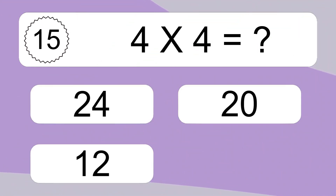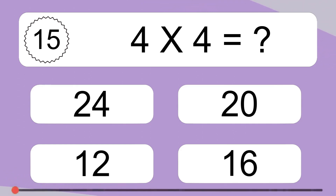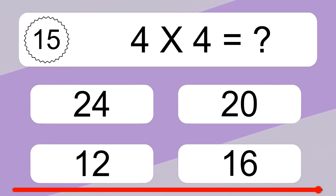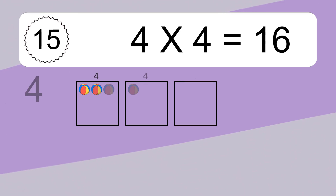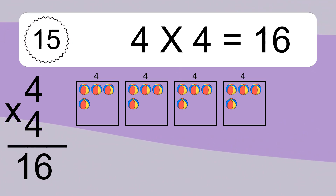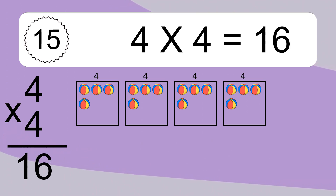Four times four equals what? Four times four equals sixteen. We have four boxes, and each box has four colorful balls inside. If you count all the balls in all the boxes together, you will have four times four balls. This equals sixteen balls.